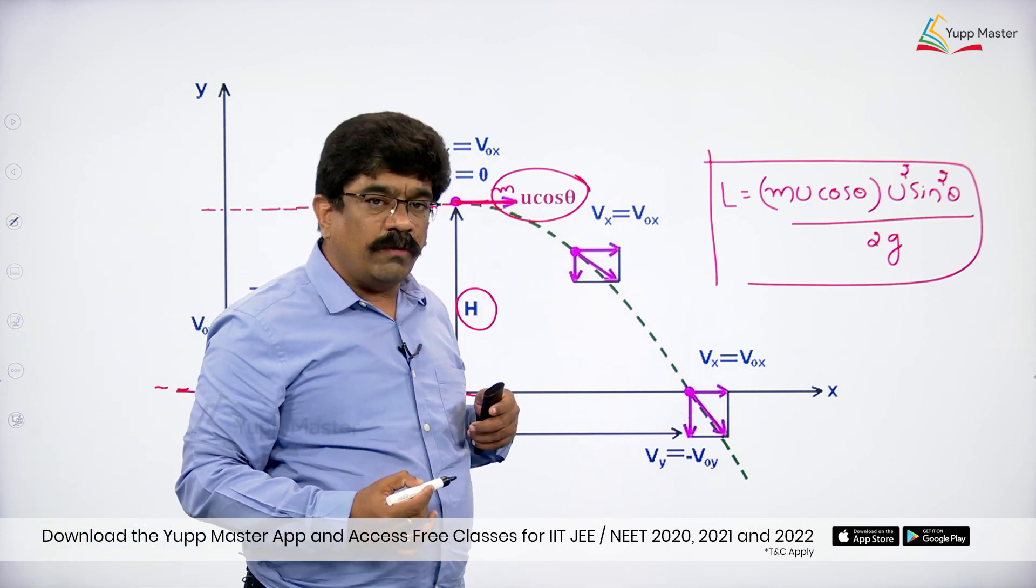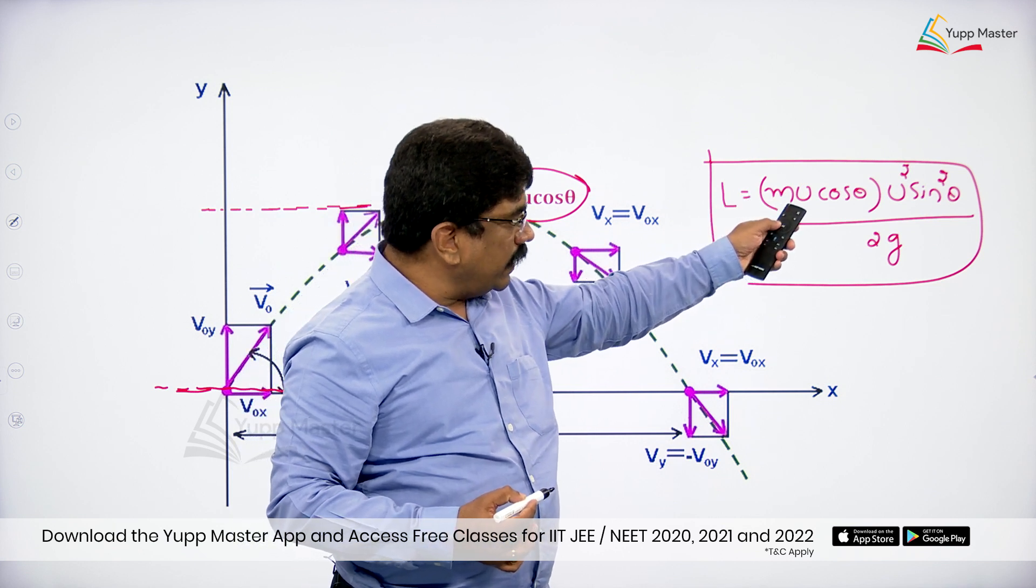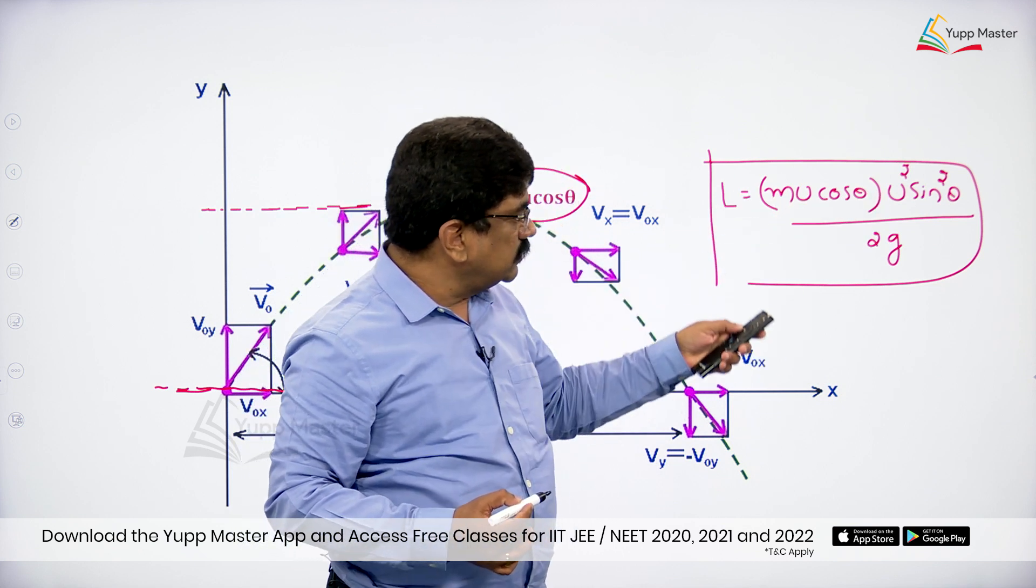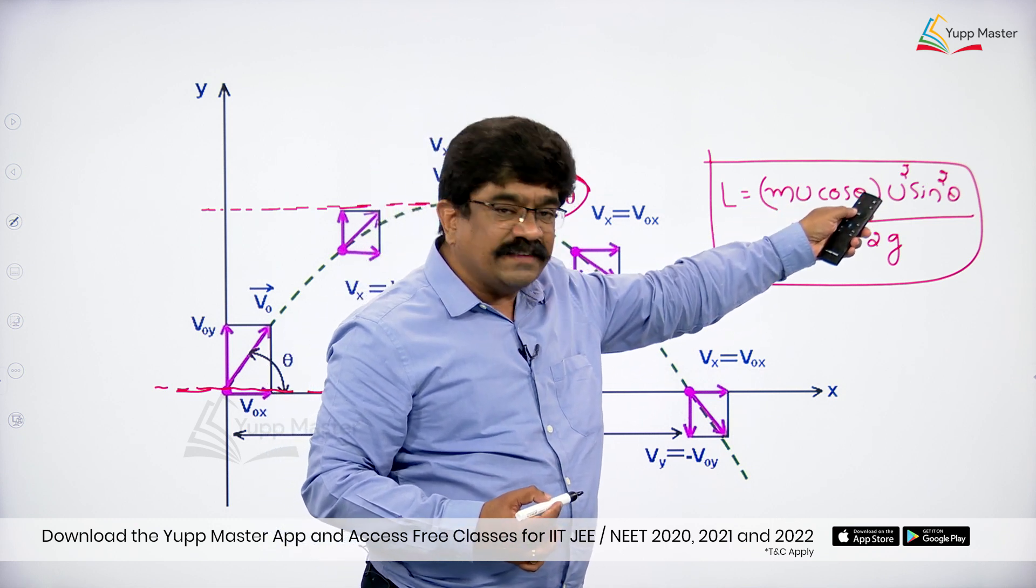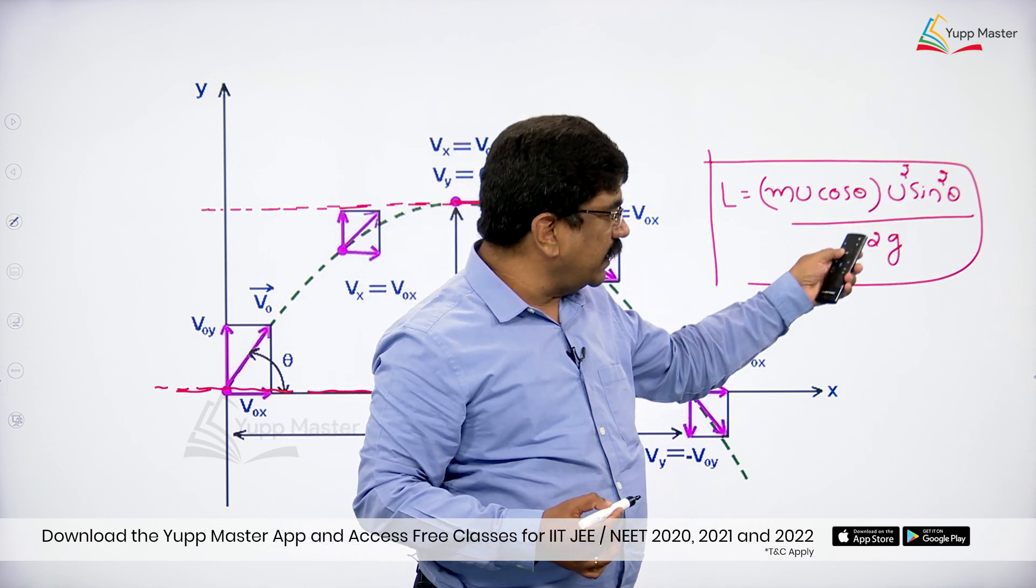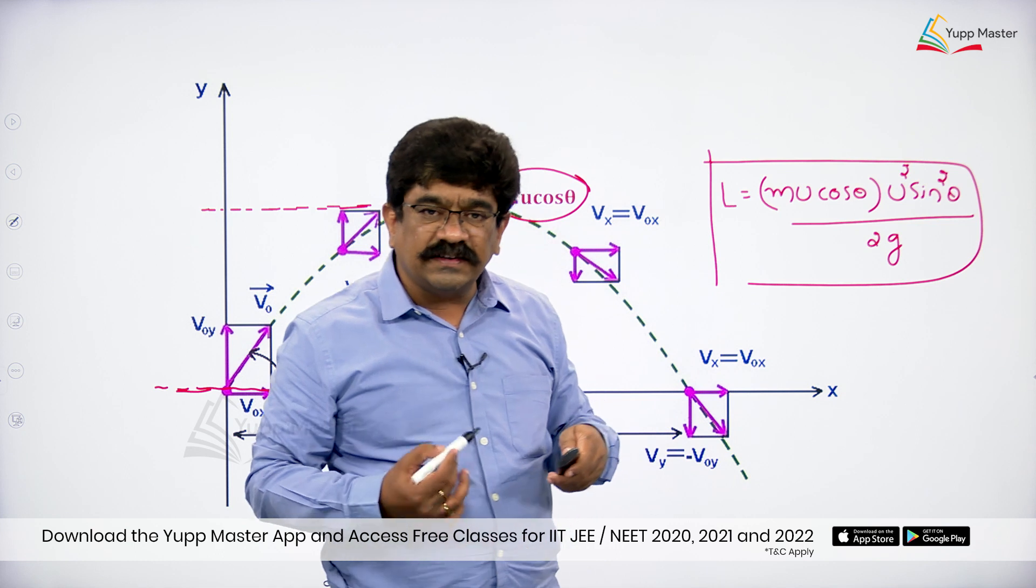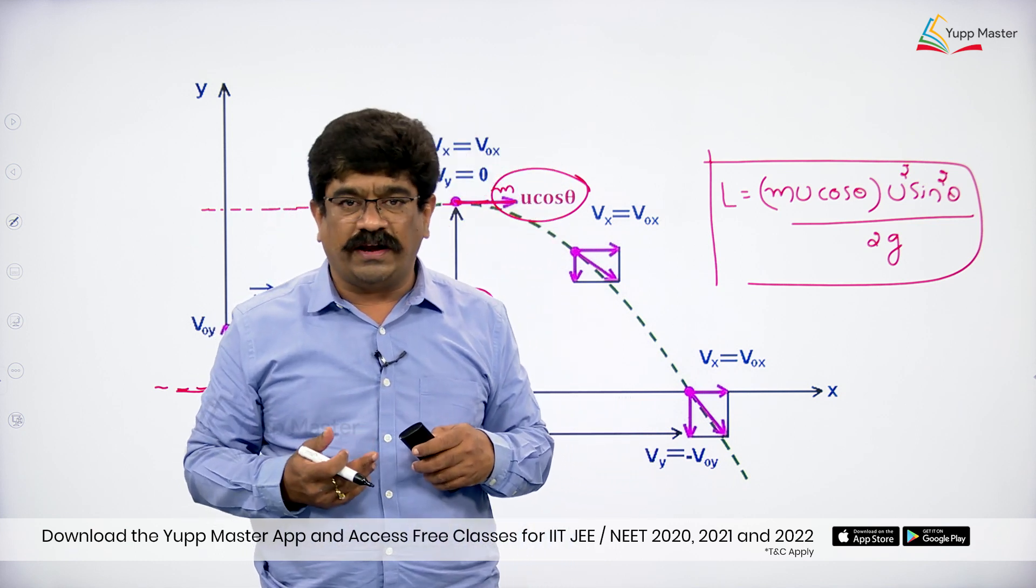Then angular momentum L is equal to momentum multiplied by perpendicular distance. So momentum means mu cos theta, and perpendicular distance means maximum height, that is u square sin square theta by 2g. This is how we can find out angular momentum of the projectile.